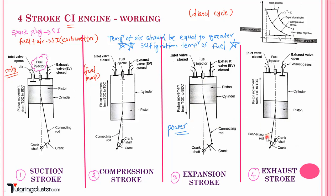During the exhaust stroke, the piston moves from bottom dead center to top dead center, and the exhaust gases are sent into the atmosphere. This is how the CI engine works.